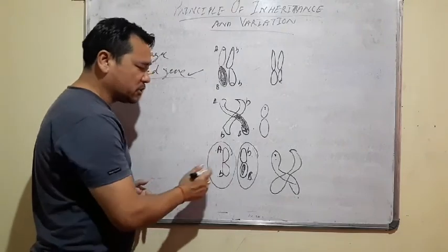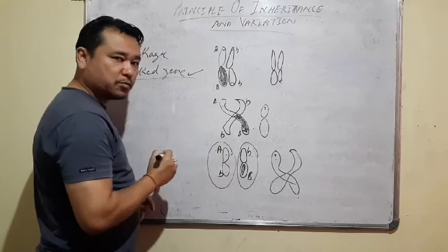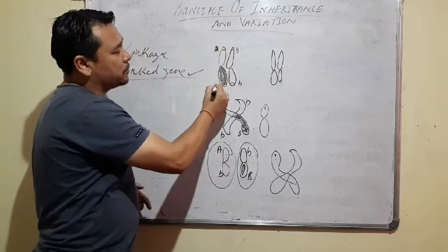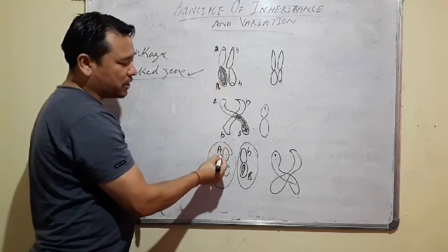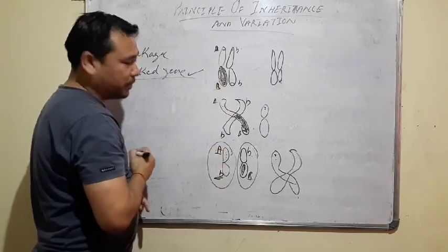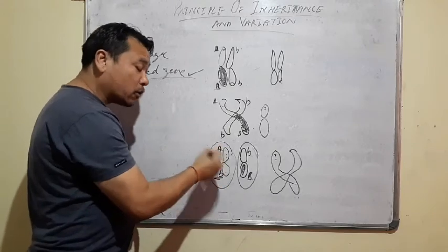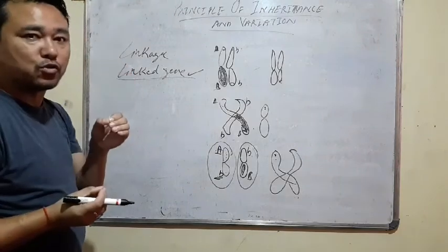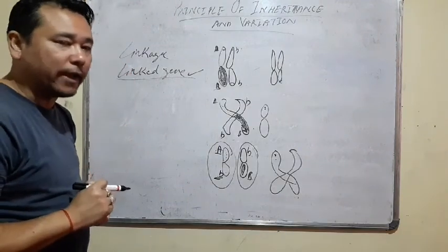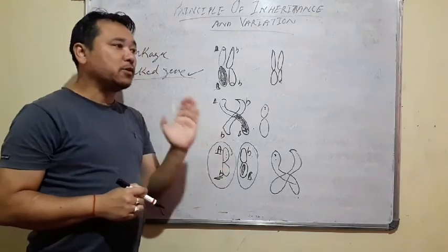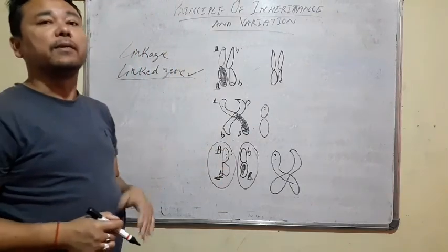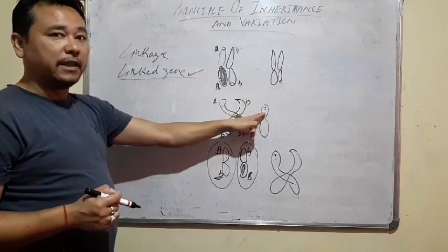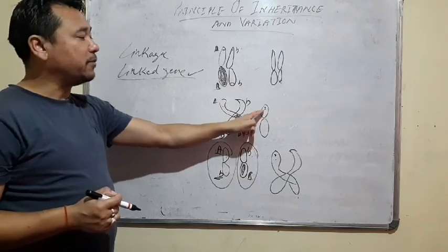What is recombination? There are two types of genes present in the chromosomes. When the genes are located far from each other, the recombinant type will be more possible. If the genes are located close together, they will not be recombinant because they will be inherited together.